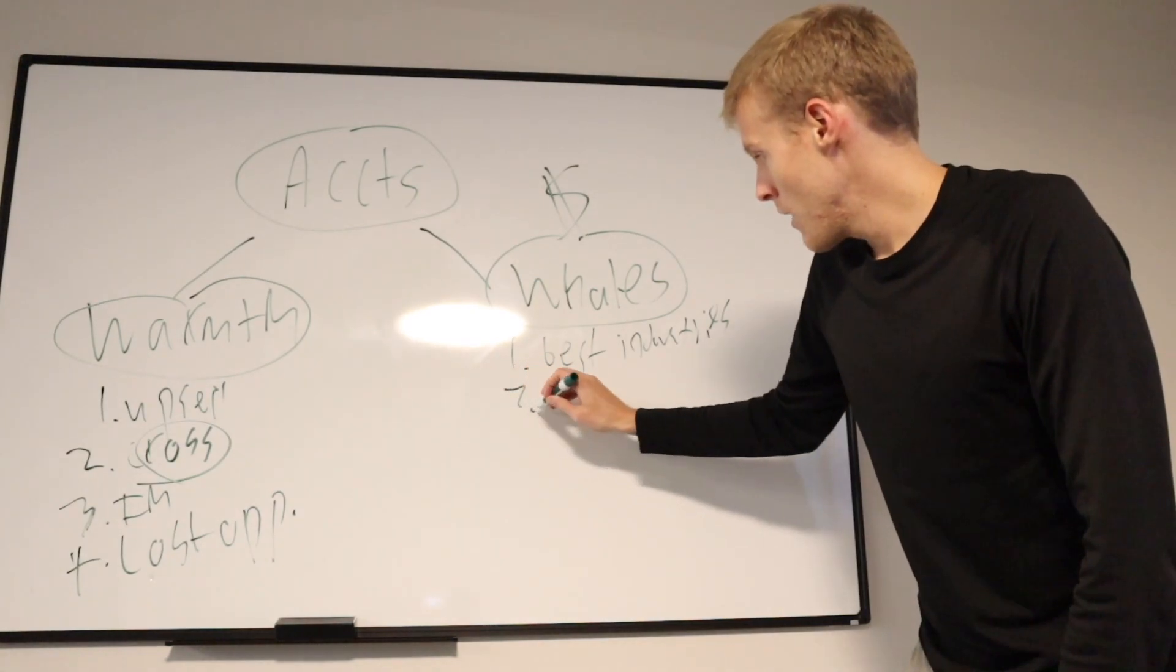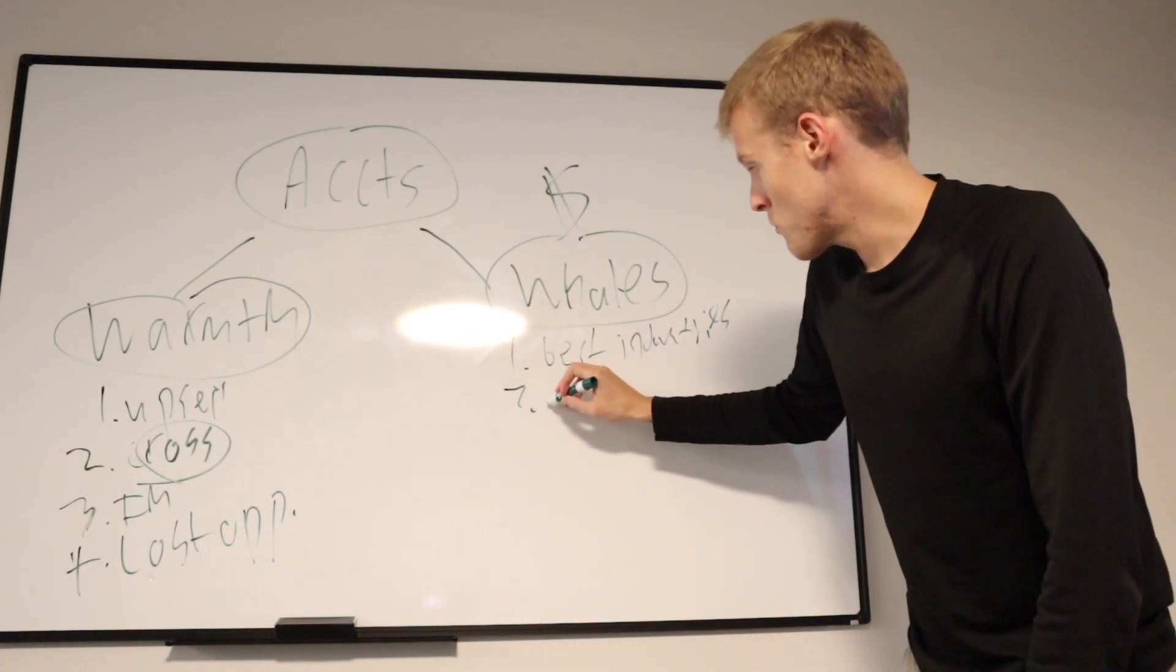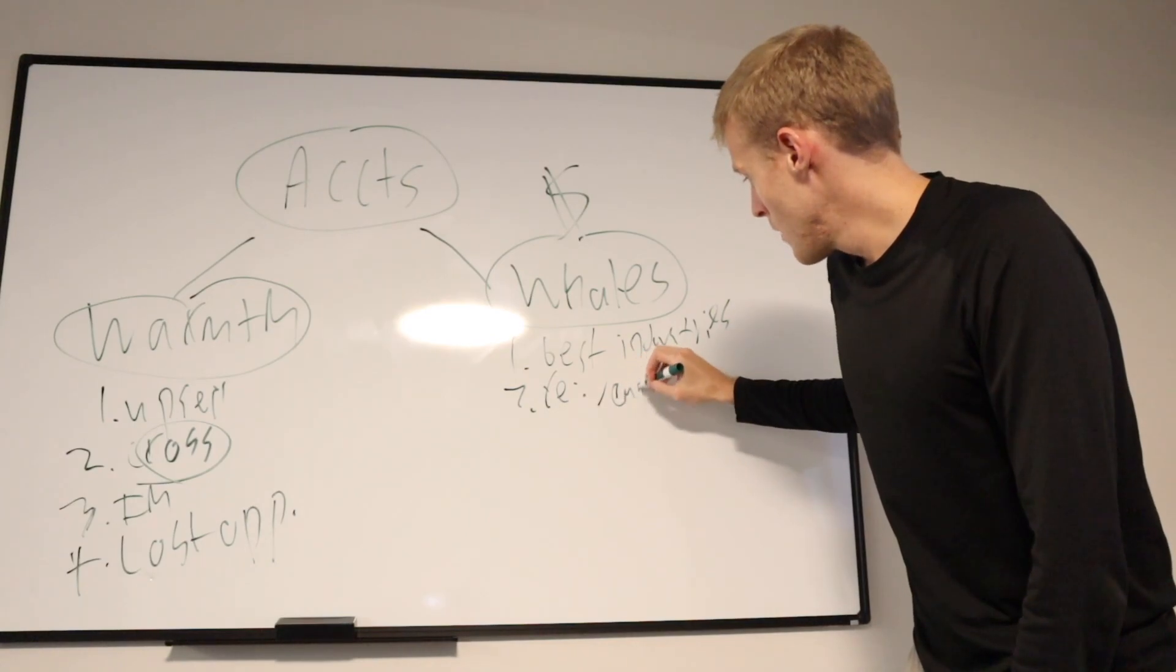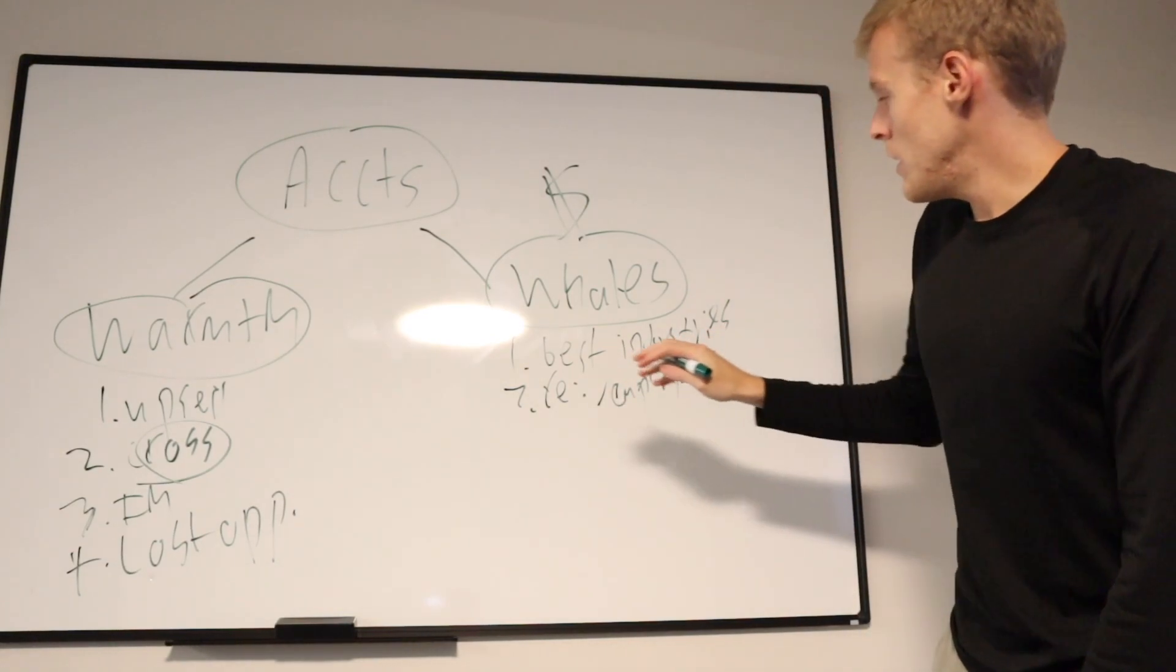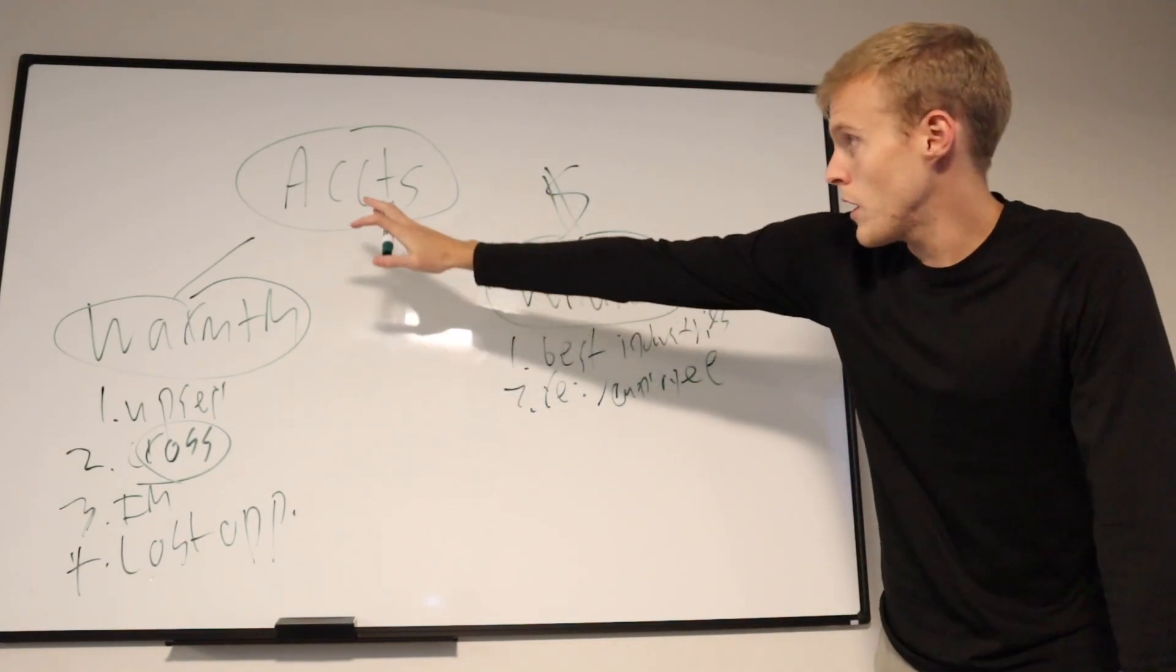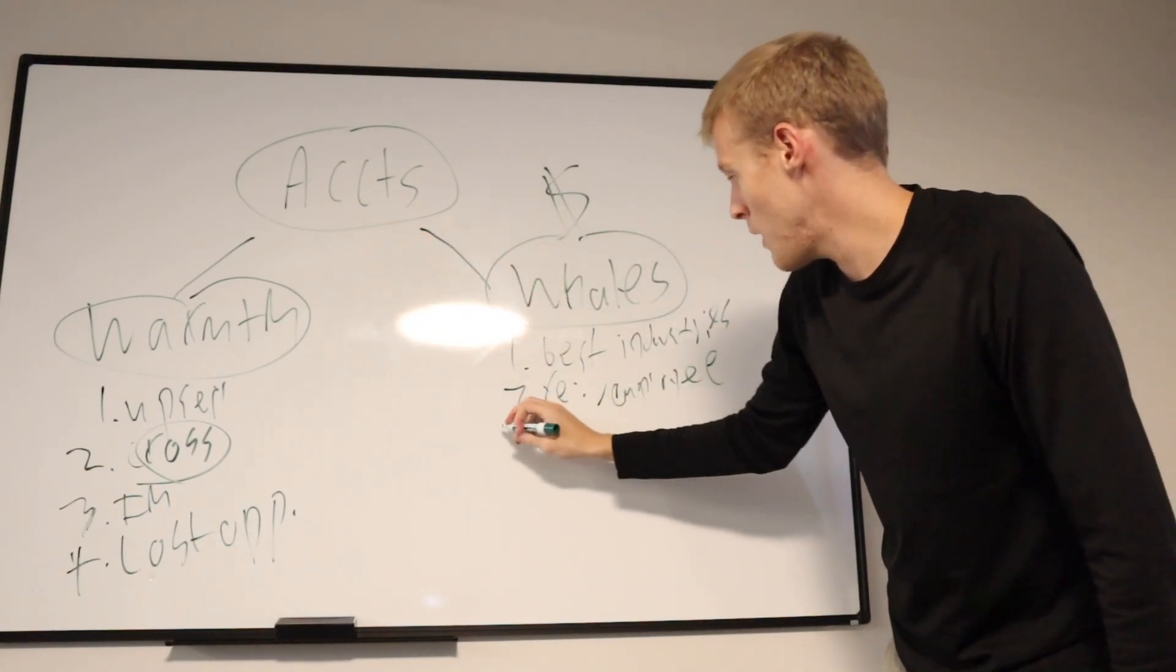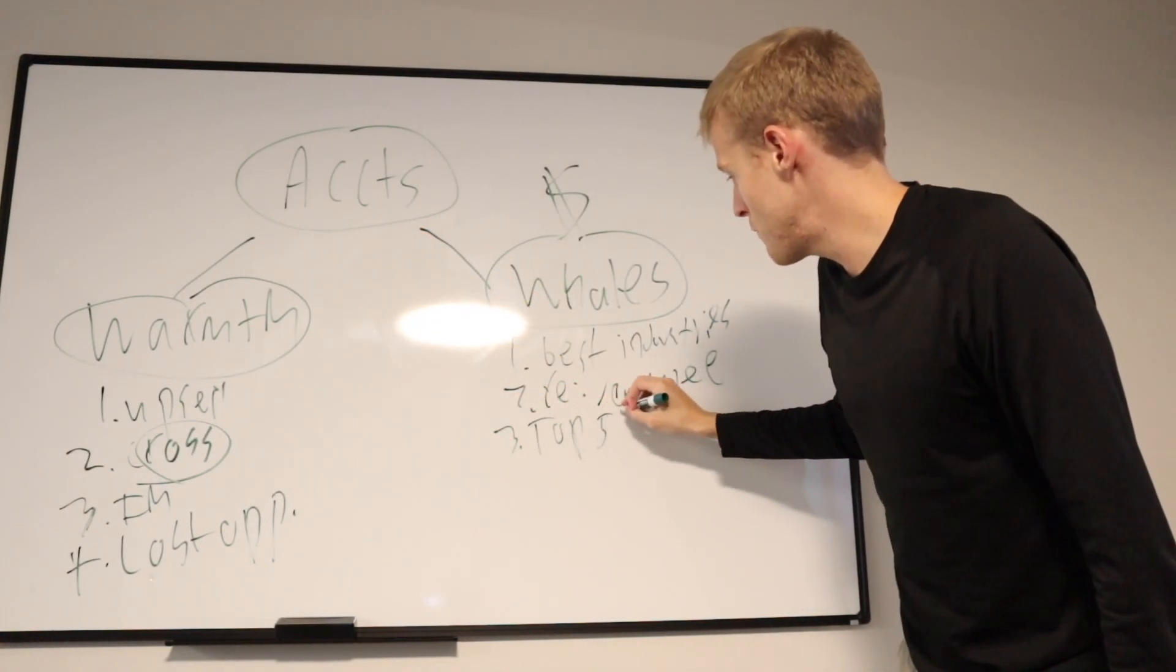And then, after that, then look to revenue and then employee count. And then what I'd recommend is condense all of your accounts into a top 50.